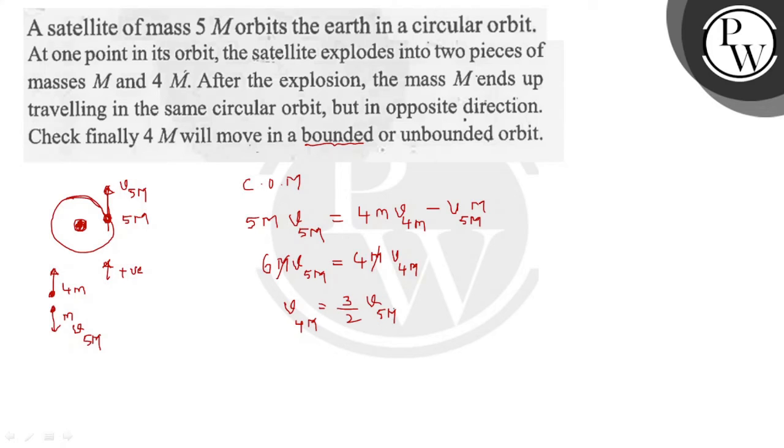So what is v5m? It is the orbital velocity, so 3 by 2 into GMₑ upon that distance r. So what is vₑ? It equals under root of 2GMₑ by r.